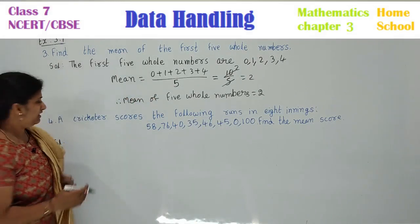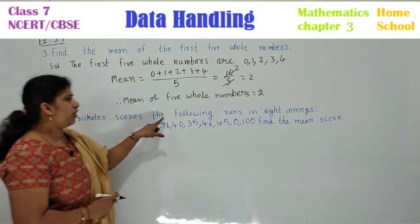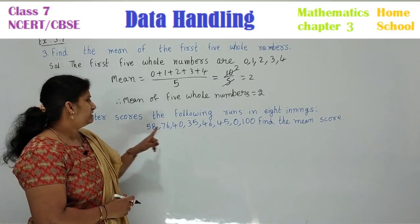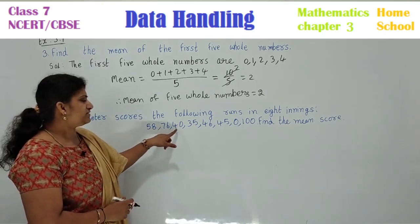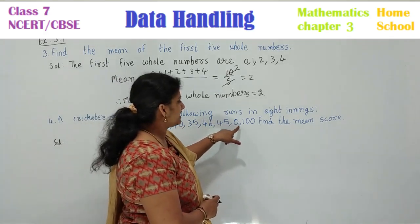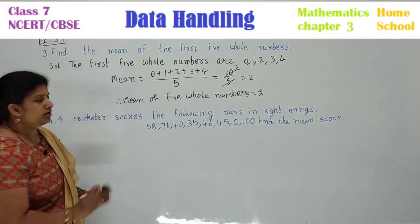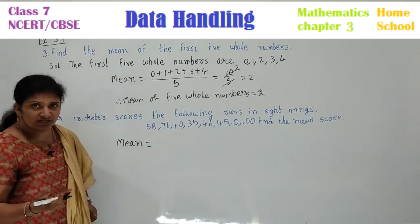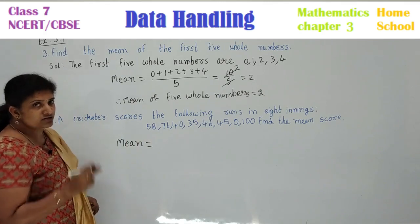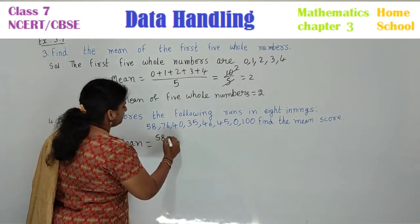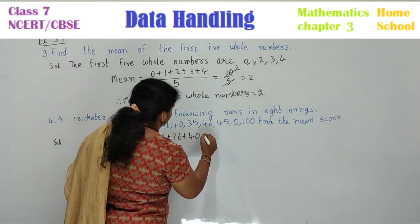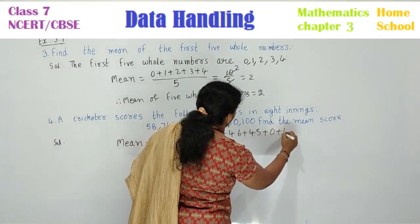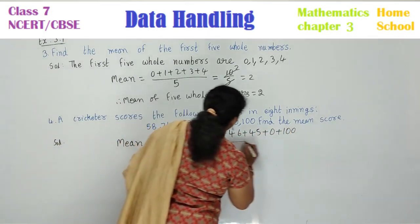See the fourth one children. A cricketer scores the following runs in 8 innings. See the scores: 58, 76, 40, 35, 46, 45, 0, 100. Find the mean score. Mean - no doubt of thinking more children. Mean means, what is the formula? Sum of the scores by number of scores. So let's add all these: 58 plus 76 plus 40 plus 35 plus 46 plus 45 plus 0 plus 100 by how many innings? 8 total number.